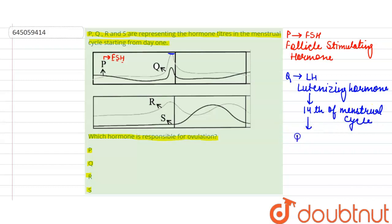This is known as LH surge, and this hormone is responsible for the process of ovulation. Now the third hormone is R, which represents the varying level of estrogen. Estrogen also reaches its peak on day 14 and helps in the LH surge and ovulation process.